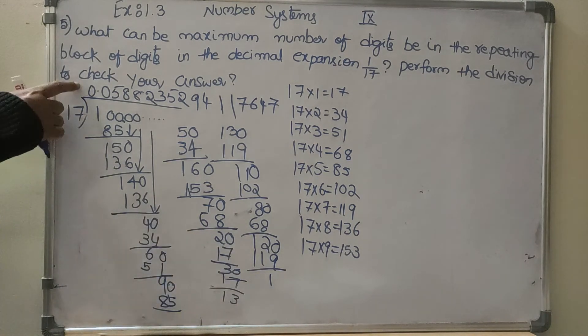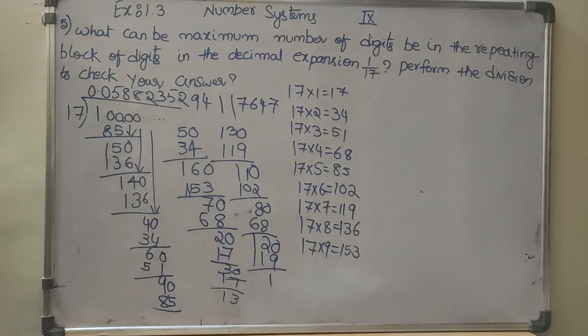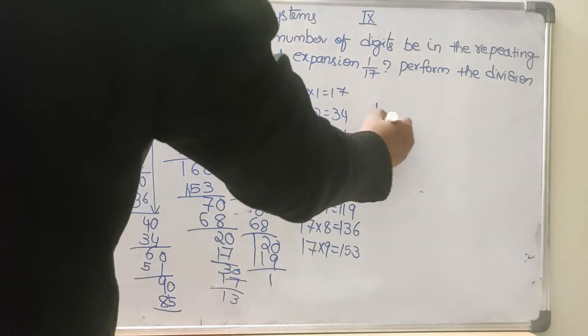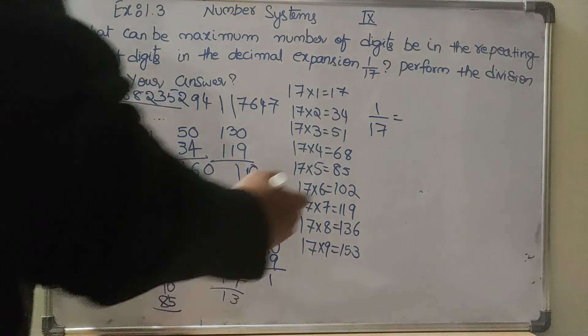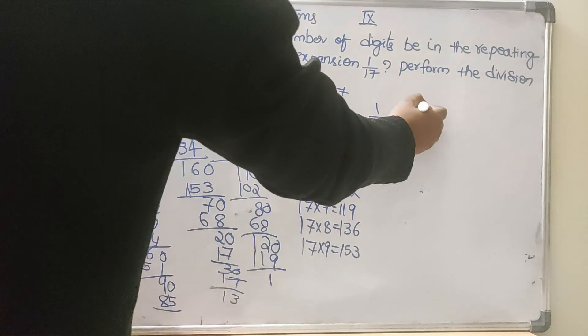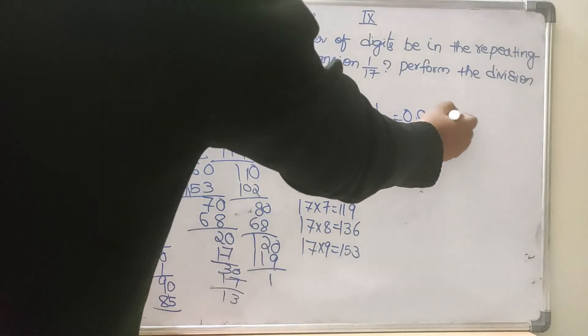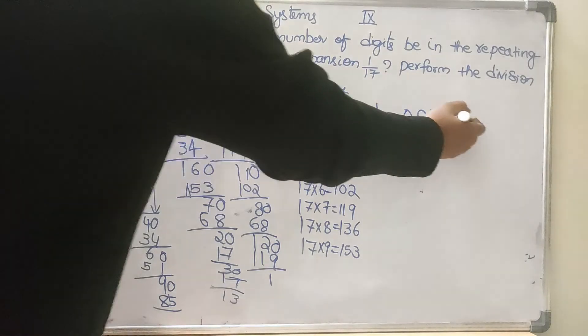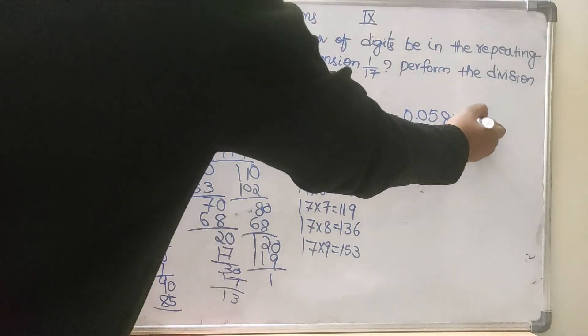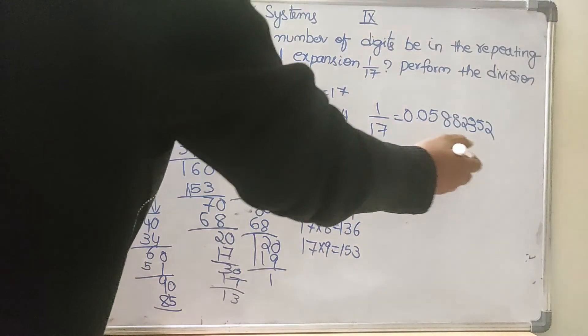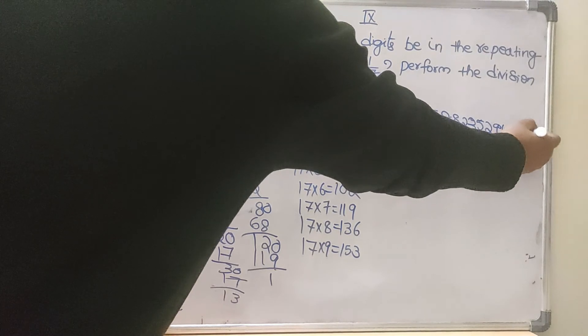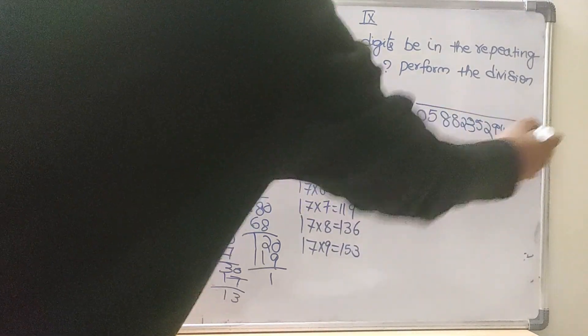So 1 by 17 in the decimal way is 0.058823. I am writing this number: 0.058823235294117647 with a bar.